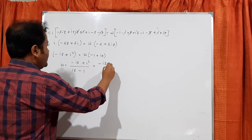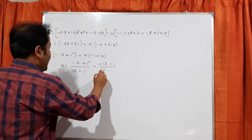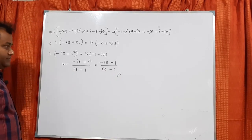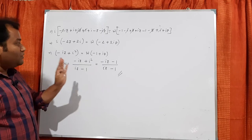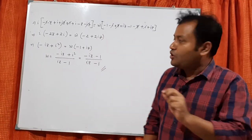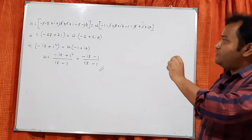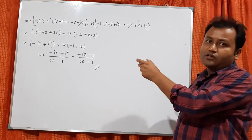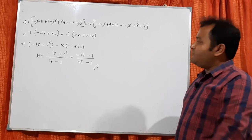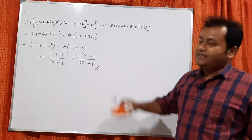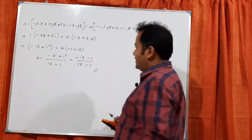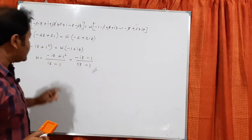So the final mapping is w = (-iz minus 1)/(iz minus 1). This is the required bilinear map. The method for finding a bilinear map using cross ratio: if three points are given, you assume the fourth point, apply cross ratio on both sides, then simplify to get the final mapping.